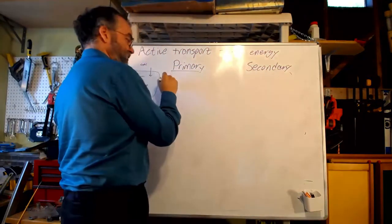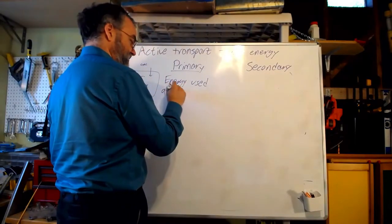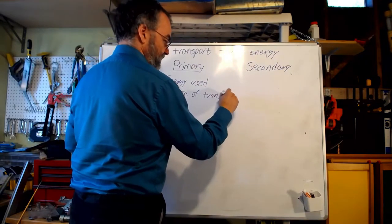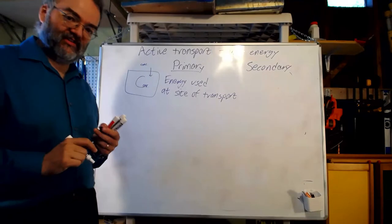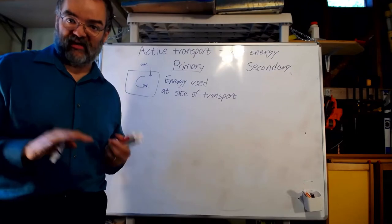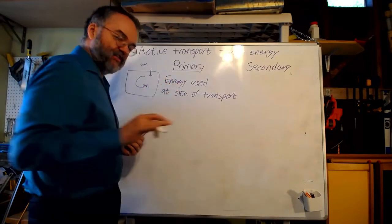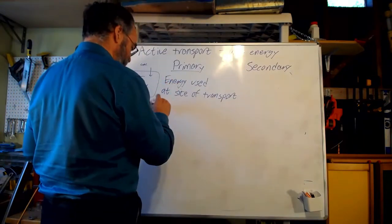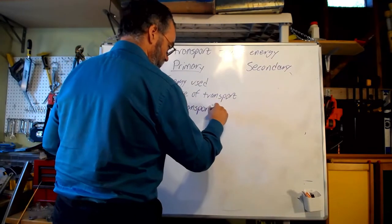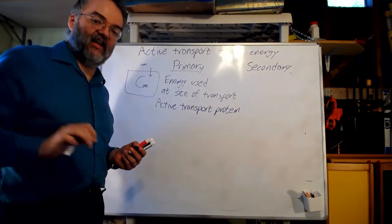In primary active transport, energy is used at the site of transport. The most common version of this is where you have some sort of transport protein that uses energy to move things across the membrane against their concentration gradient. So this is usually being transported through some sort of active transport protein. Now of the transport proteins we talked about, channels and carriers. Channels cannot be active transport. Channels are always passive transport. So this would be some kind of carrier.